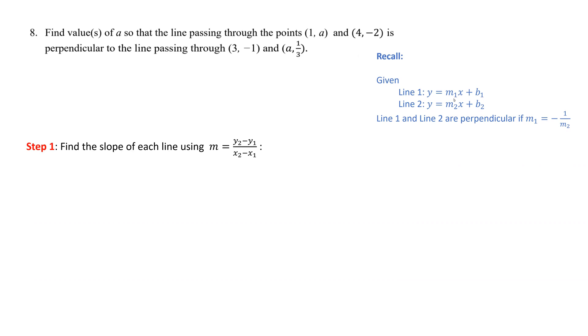So first, we need the slope of each line using the equation for slope, which is rise over run, or the vertical change over the horizontal change. For the first line, let P1 have coordinates (1, a).